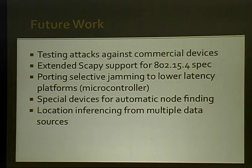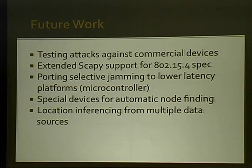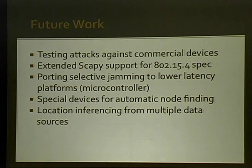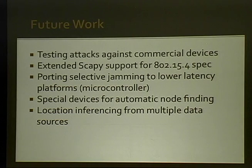This is a work in progress. Over the next month or two, we'll be testing a larger variety of attacks against commercial devices — if you have any you'd like to volunteer, they're sometimes hard to get when you tell vendors what you're going to use them for. We'll expand Scapy support for the 802.15.4 spec and hopefully add ZigBee as well. We'll be porting selective jamming to the CC2430 for lower latency — hopefully within-frame jamming — and building special devices including some with robotics for automatic node finding. We're also developing geographic location inferencing using time of arrival, angle of arrival, and other techniques from multiple data sources to map where ZigBee devices are located.